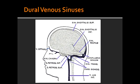What are the dural venous sinuses? Dural venous sinuses are large venous channels that run through the dura. Blood from the cerebral veins and cerebrospinal fluid from the arachnoid granulations drain into the dural venous sinuses, which eventually drain into the internal jugular vein.